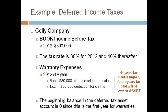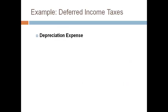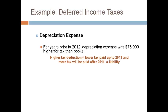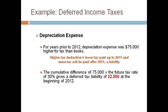The beginning balance in the deferred tax asset starts at zero since this is the first year for warranties. The company also has a book-tax difference related to depreciation. The cumulative difference for all prior years is a $75,000 higher deduction for tax than for books. The determination that it was a liability was made in the first year the difference occurred. A greater deduction for tax gives lower taxable income and lower tax paid previously, which means more tax will be paid in future years. Paying more taxes in the future is a liability. The beginning balance in the deferred tax liability account is $22,500. The balance in the deferred tax account is always equal to the cumulative difference times the tax rate.